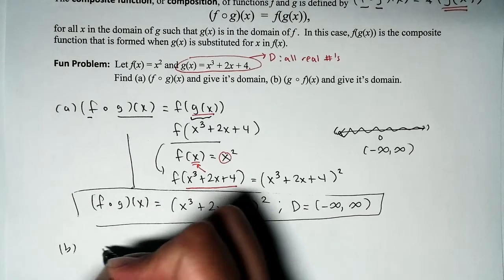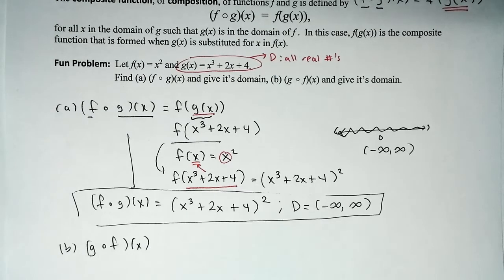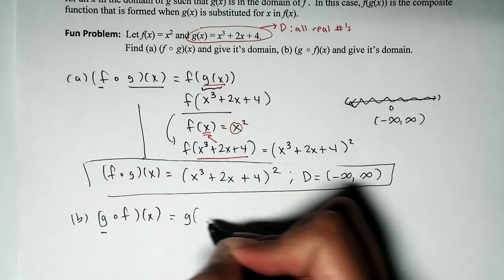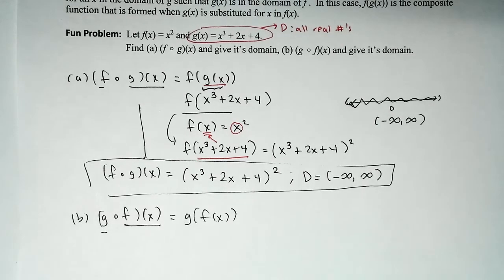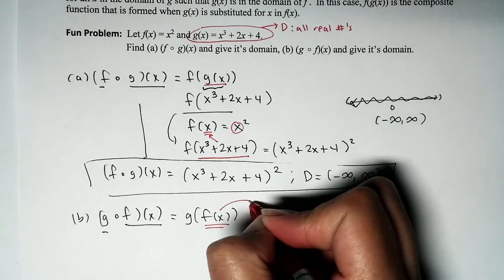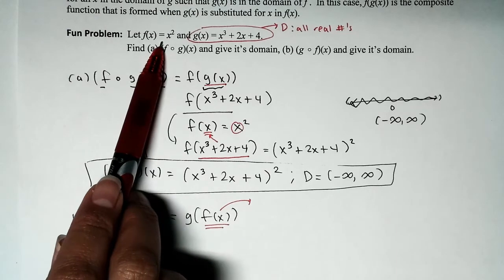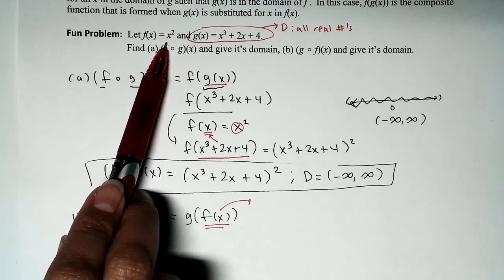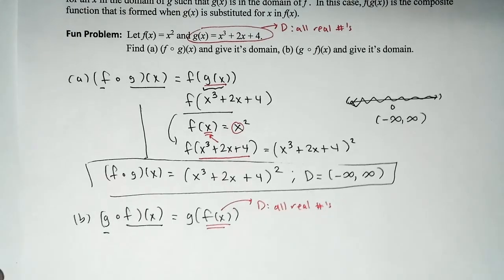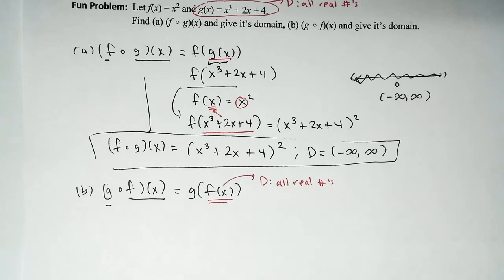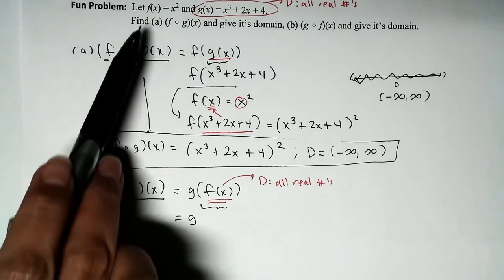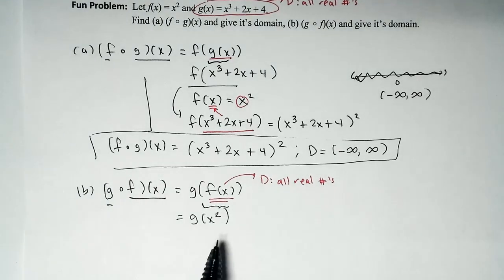Now let's find G of F of X. I'll rewrite it as G of the second function, F of X. We need to respect the domain of the inside function F. F of X equals X squared, which is a polynomial — no radicals or rational expressions — so the domain of the inside function F is the set of all real numbers. Let's begin the substitution process: we substitute F of X, which is X squared, into function G.